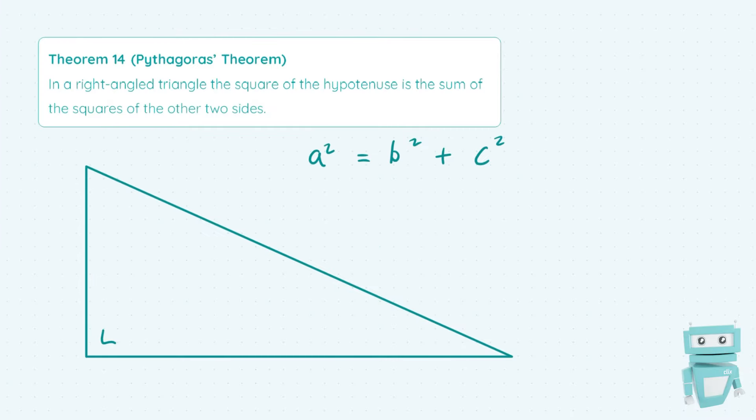But all this theorem states is that in a right-angled triangle, the square of the hypotenuse is the sum of the squares of the other two sides, or quite famously, a² = b² + c².